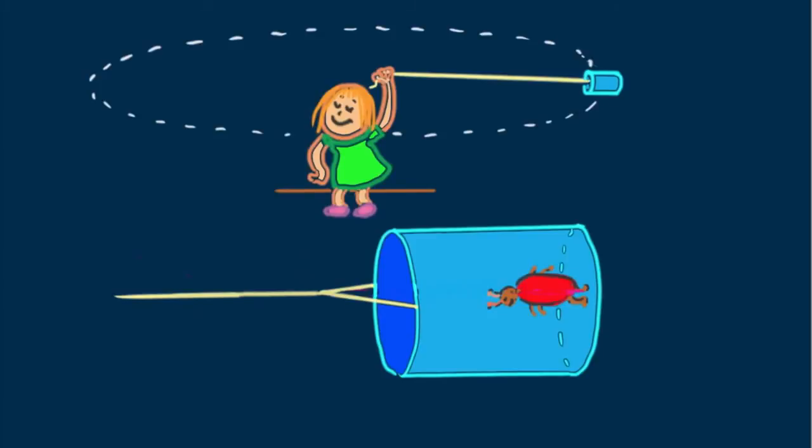But what if we view all this from the bug's frame of reference inside the whirling can? The physics is quite different in a rotating frame of reference. From the bug's point of view, there's an outward force pressing her against the bottom of the can, as real to her as gravity. She calls this outward force a centrifugal force.